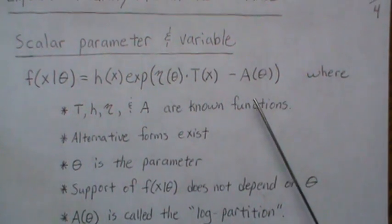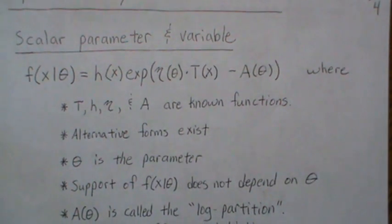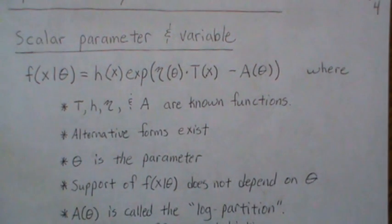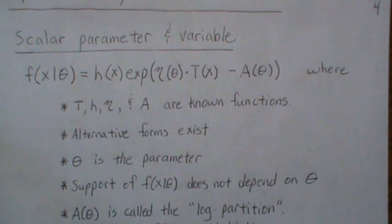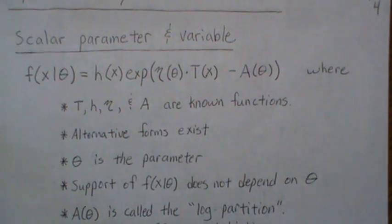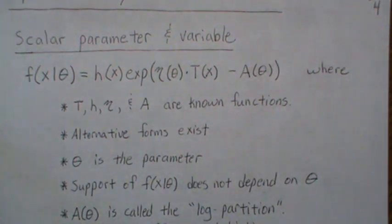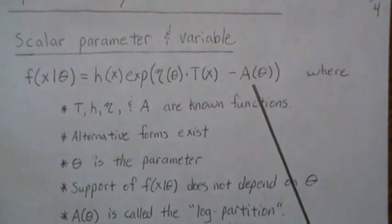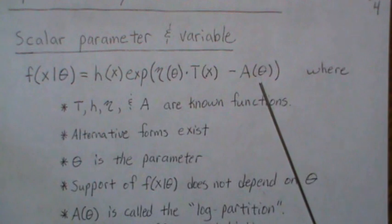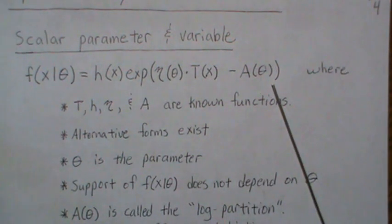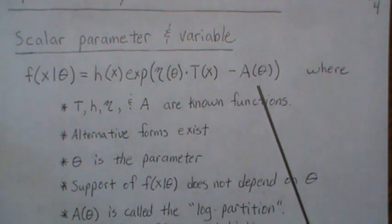A(theta) is called the log partition. If you have a function that doesn't integrate to 1, it can't be a PDF, so you divide by a normalizing constant to force it to integrate to 1. Whatever you divide by is called a partition. Taking the log of A(theta) — or possibly the negative log — gives your partition for this exponential family, so it's generically called the log partition.